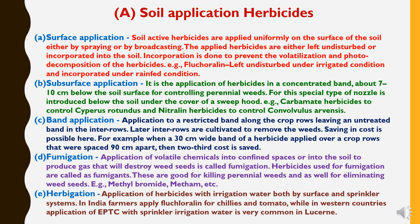The third method is band application — application to a restricted band along the crop rows leaving an untreated band in the inter-rows. The inter-rows are later cultivated to remove the weeds. Saving in cost is possible here. For example, when a 30 cm wide band of herbicide is applied over crop rows spaced 90 cm apart, two-thirds of the cost is saved.